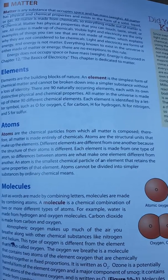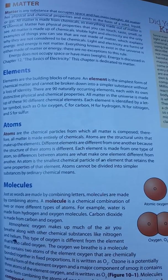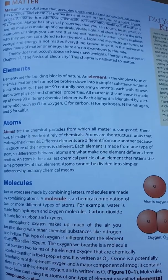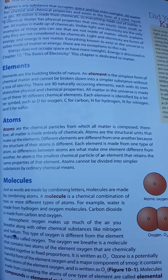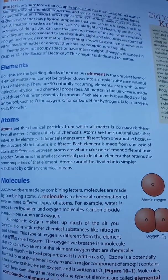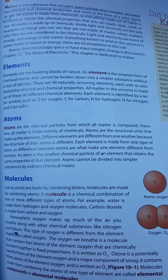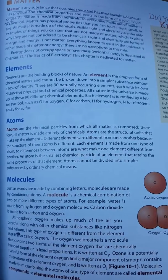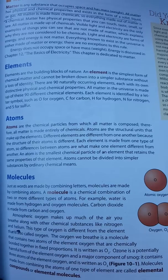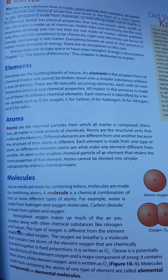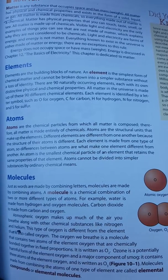We're going to begin with molecules. Just as words are made by combining letters, molecules are made by combining atoms. A molecule is a chemical combination of two or more different types of atoms. For example, water is made from hydrogen and oxygen molecules. Carbon dioxide is made from carbon and oxygen.